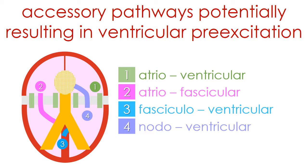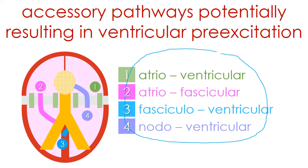These are the four types of accessory pathways that can result in ventricular pre-excitation either during sinus rhythm or during pre-excited tachycardia, including atrial fibrillation.